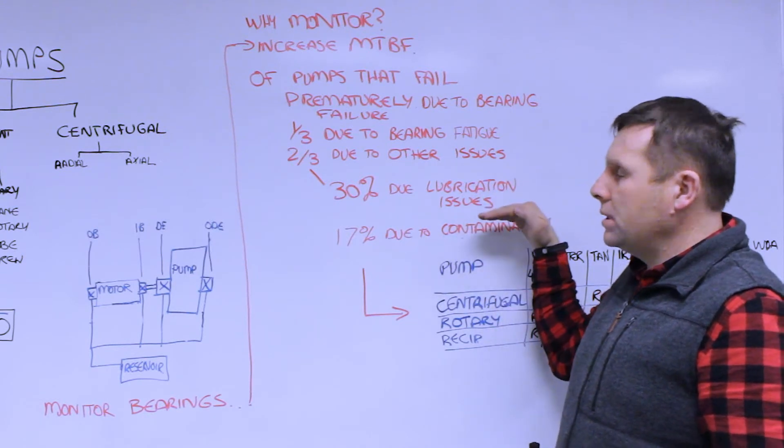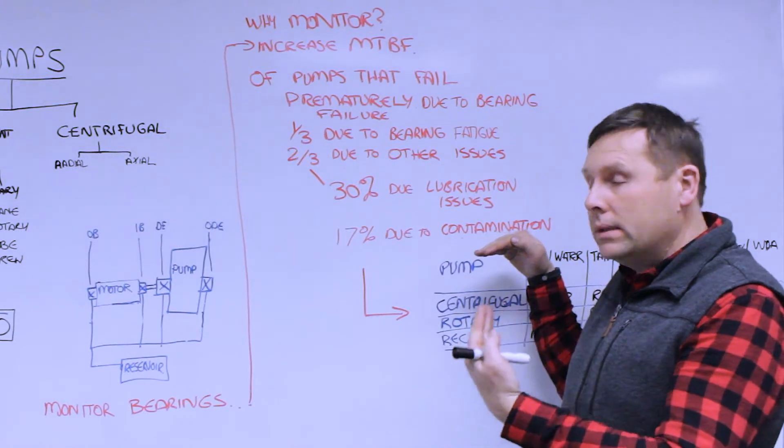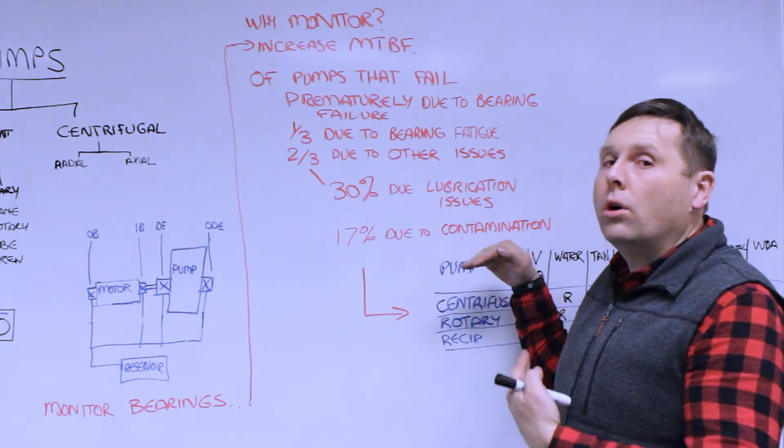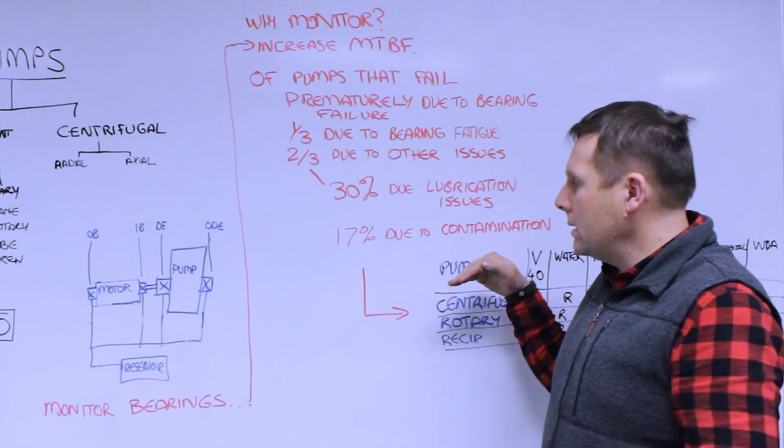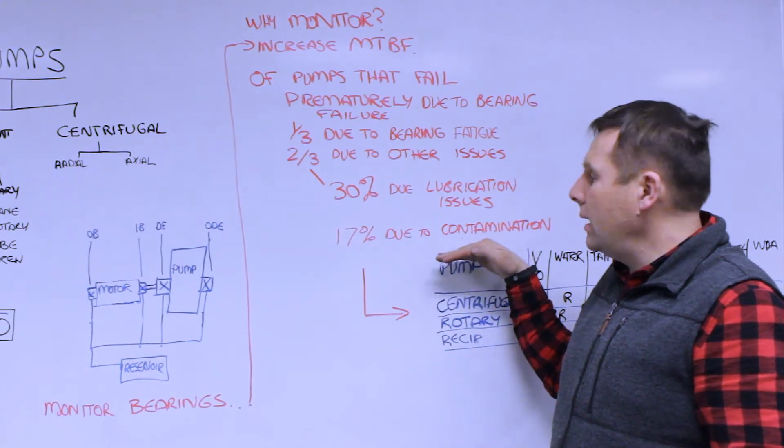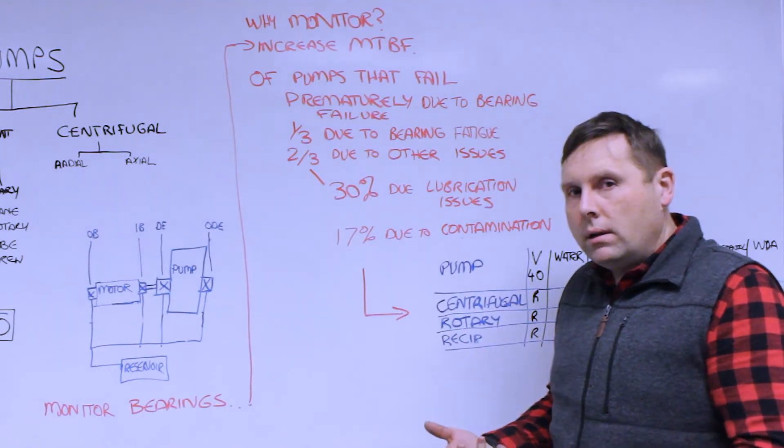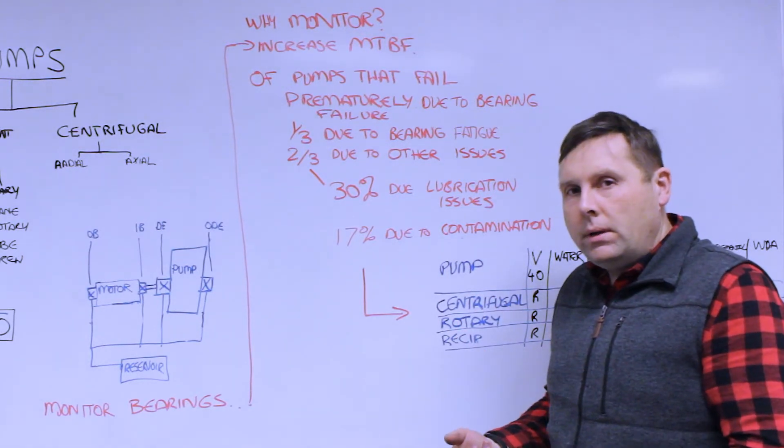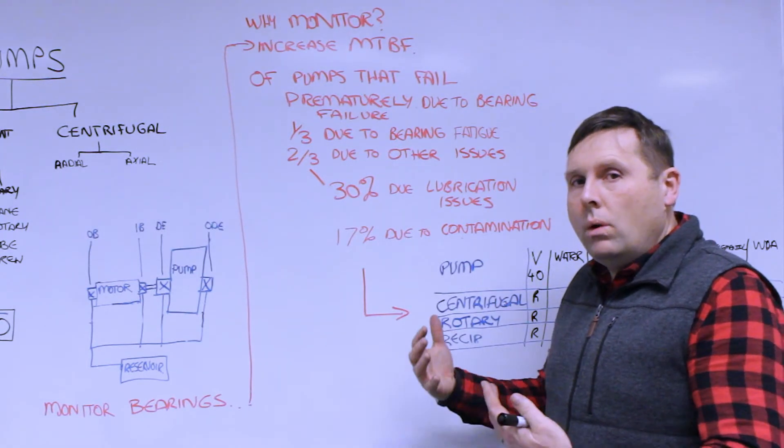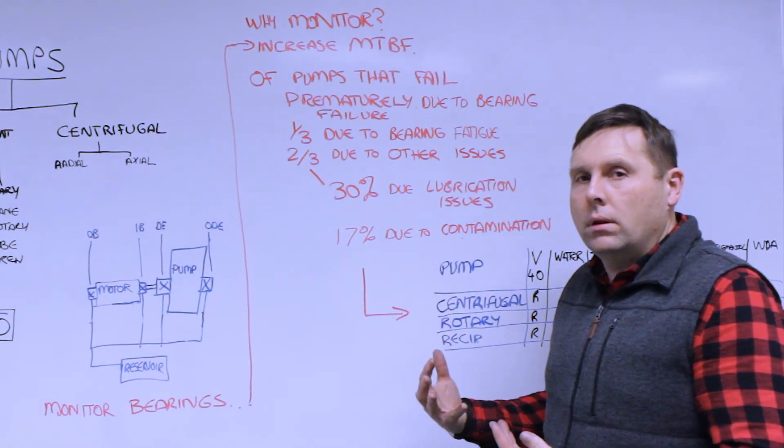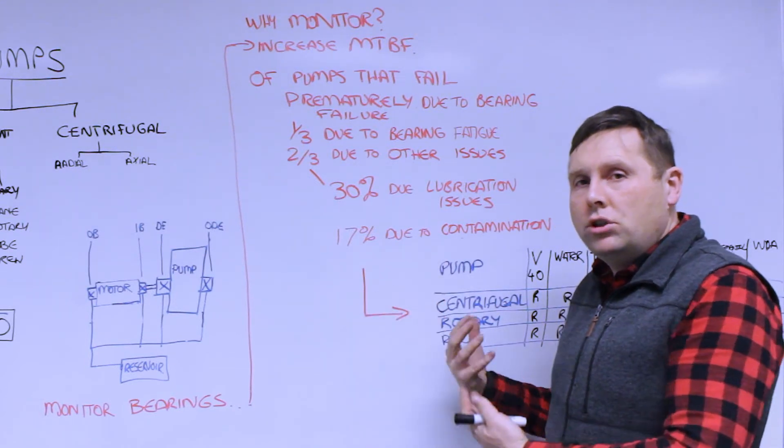Of those other issues, 30% is lubrication related. That could be the wrong lubricant, the lubricant degraded past its point, or no lubricant in the pump bearing system. And 17% is due to contamination, such as air getting in, particulates, or water contamination. As a result, when we're monitoring for contamination in these issues, we want to check with oil analysis.